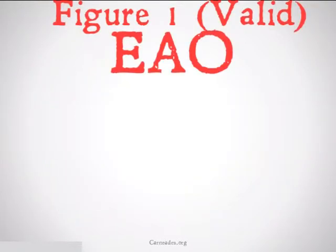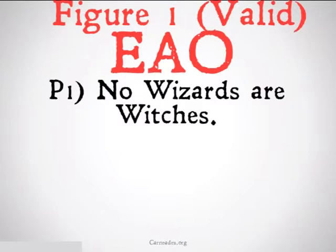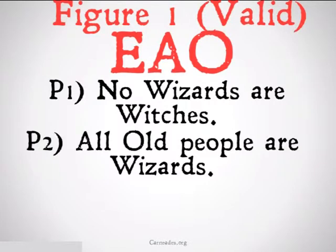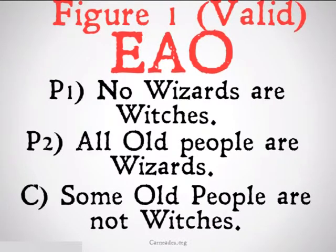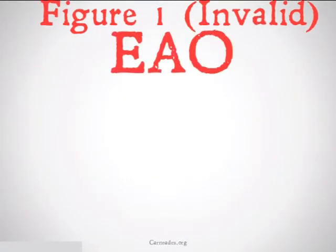Figure 1 valid EAO might look something like: no wizards are witches, all old people are wizards, therefore some old people are not witches. The only thing that needs to exist is the subject — old people — so it's valid.